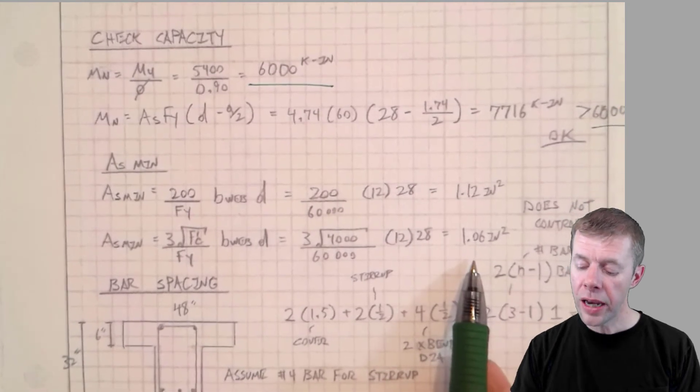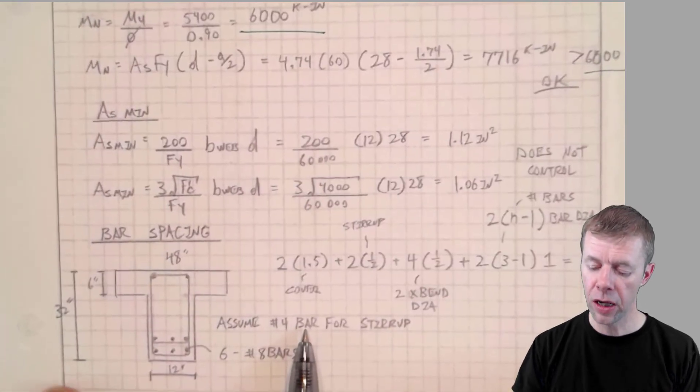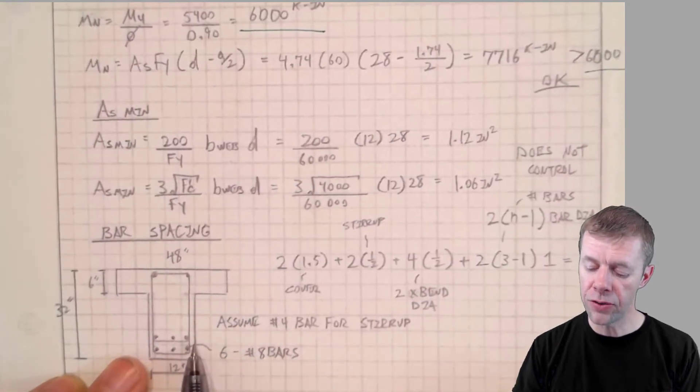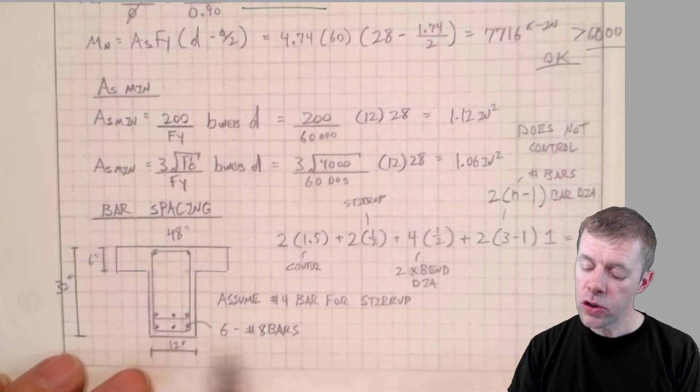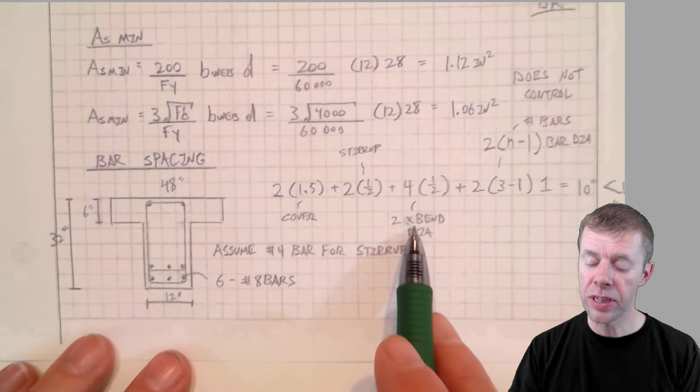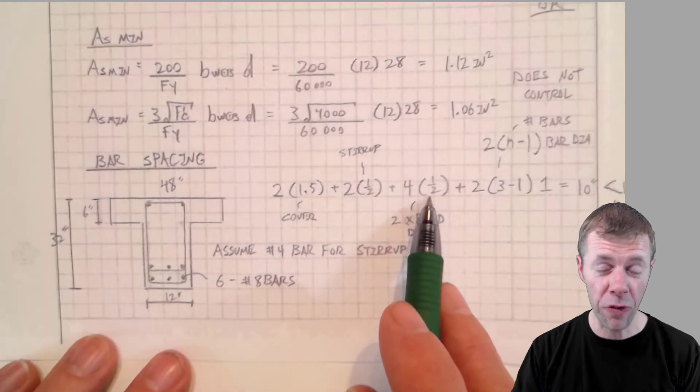And now I have to do my bar spacing check. So I have two covers on both sides. I have two stirrups on both sides. I have two stirrup bend diameters. That's four times the diameter of the stirrup.